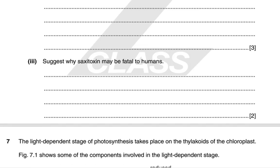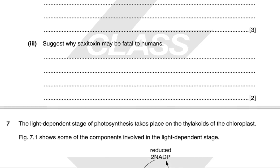Saxitoxin may be fatal to humans because if it blocks sodium channels, action potentials cannot be set up — there would be no depolarization or reduced depolarization — essentially causing paralysis. Vital processes such as the beating heart or breathing, which depend on nerve impulses, would therefore be fatally disrupted.